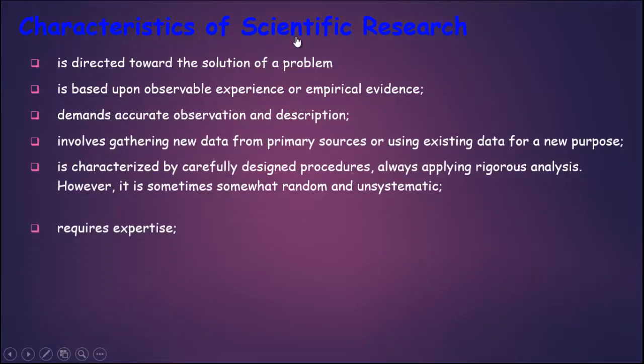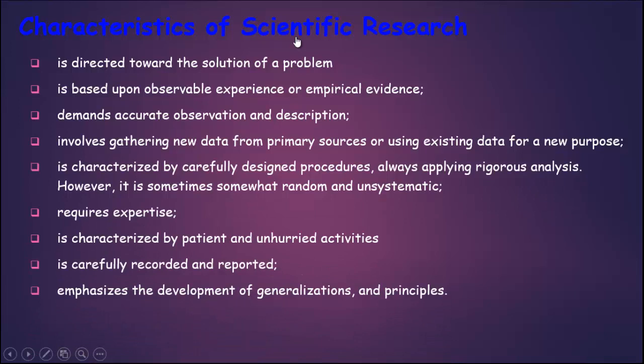These are the following characteristics of scientific research. Scientific research is directed toward the solution of a problem. It is based upon observable experience or empirical evidence. It demands accurate observation and description. It involves gathering new data from primary sources or using existing data for a new purpose. It is characterized by carefully designed procedures, always applying rigorous analysis — though it is sometimes somewhat random and unsystematic. Scientific research requires expertise and is characterized by patience and unhurried activity. It is carefully recorded and reported, and emphasizes the development of generalizations and principles.